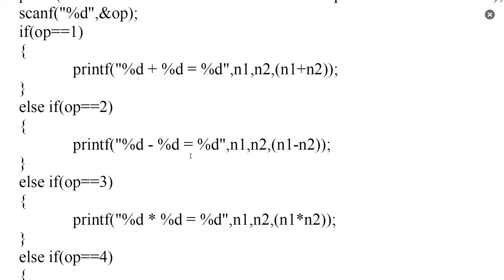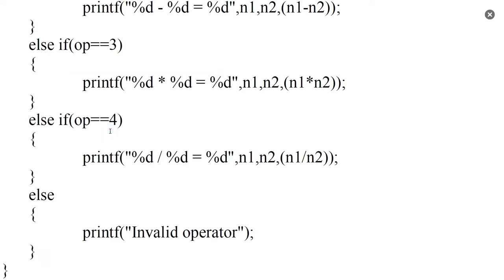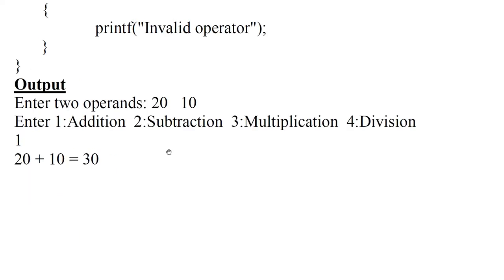n1 minus n2 equals n1 minus n2. Third case: multiplication — n1 into n2 equals n1 into n2. Fourth case: division — n1 divided by n2 equals n1 divided by n2. Else case displays invalid operator. Suppose the user enters 20 and 10, then enters option 1. The result is 20 plus 10 equal to 30.